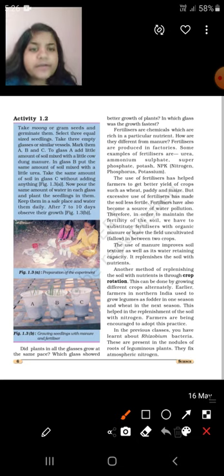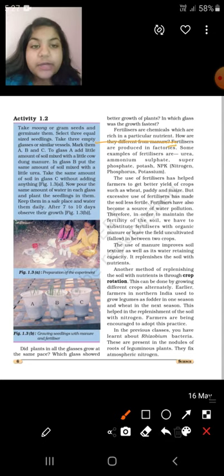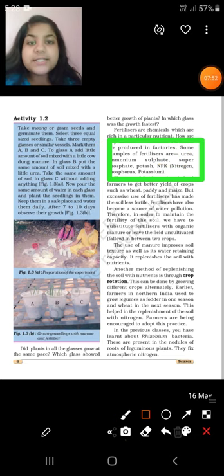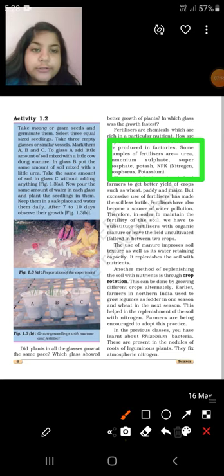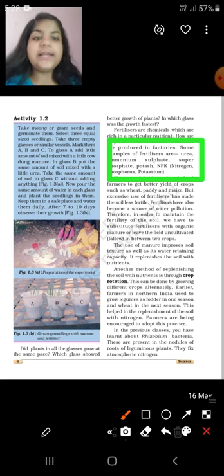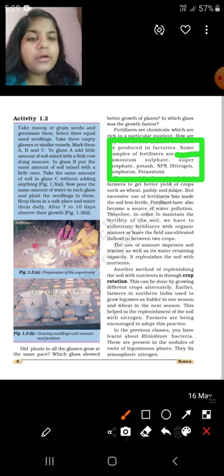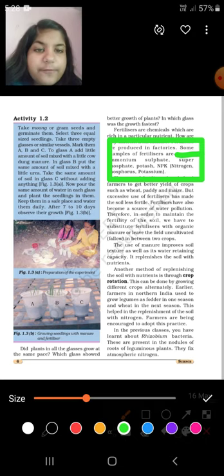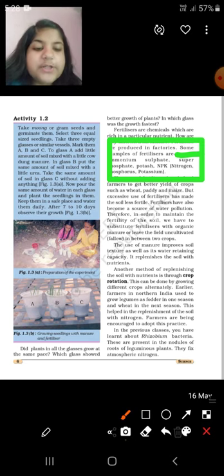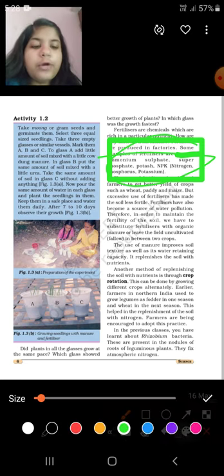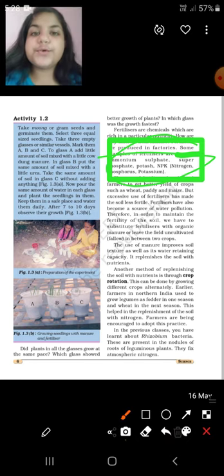Fertilizers are chemicals which are rich in a particular nutrient. How are they different from manure? Fertilizers are produced in factories. Some examples of fertilizers are Urea, Ammonium Sulphate, Superphosphate, Potash, and NPK - Nitrogen, Phosphorus, Potassium. This is the most important part of this chapter. You have to learn the names of the fertilizers which are used in our daily life: Urea, Ammonium Sulphate, Superphosphate, Potash, NPK - Nitrogen, Phosphorus, Potassium. These are the fertilizers which are used in our day-to-day life.